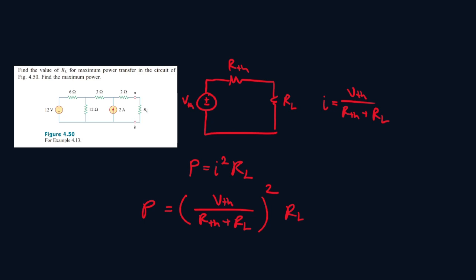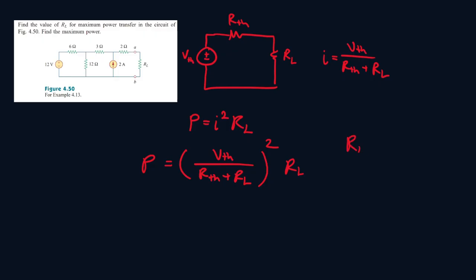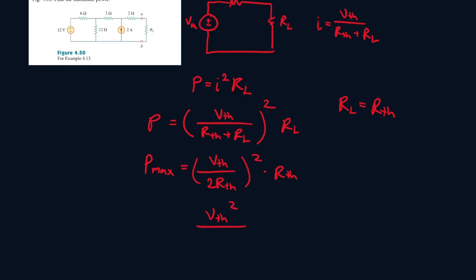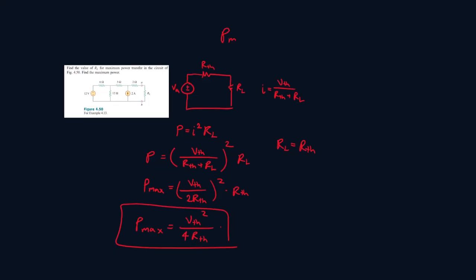Power is at its maximum when RL is equal to RTH. There is calculus involved to derive that, but the key result is that when RL equals RTH, you get maximum power. Substituting: VTH over (RTH + RTH), which is 2RTH, squared, times RTH — simplifying gives VTH squared over 4RTH squared times RTH, and one RTH cancels. So the formula for maximum power is P_max equals VTH squared all over 4RTH.